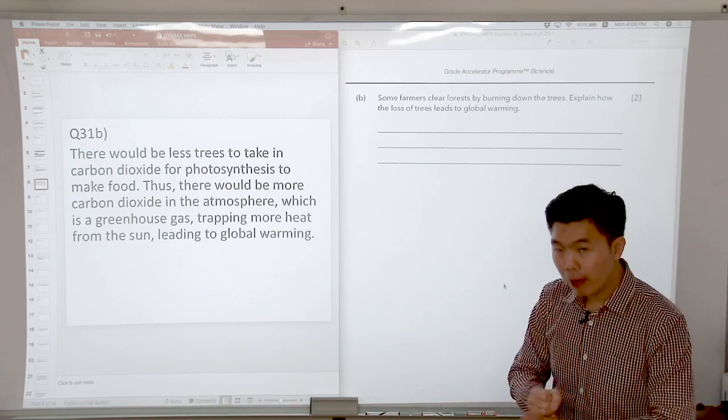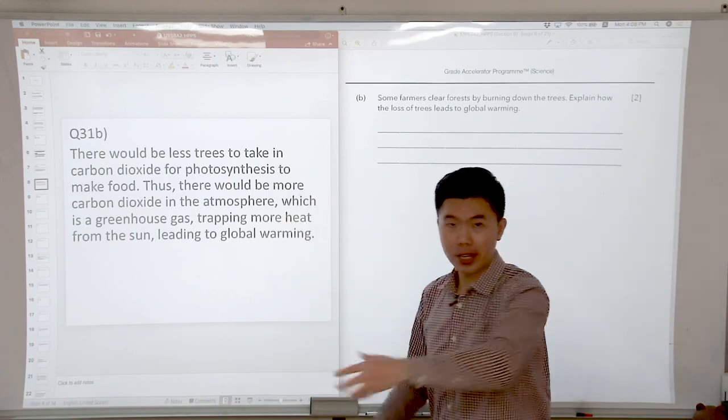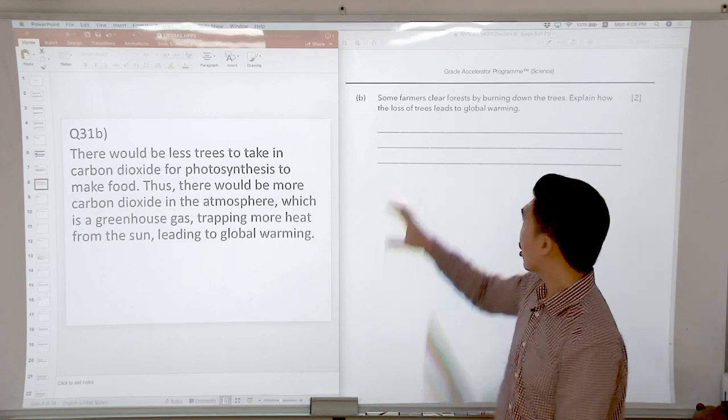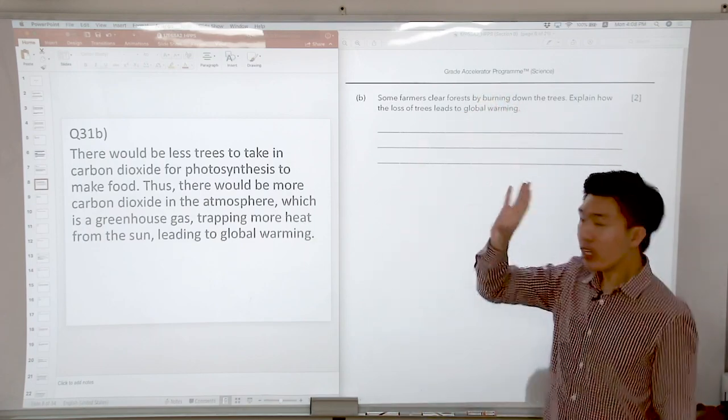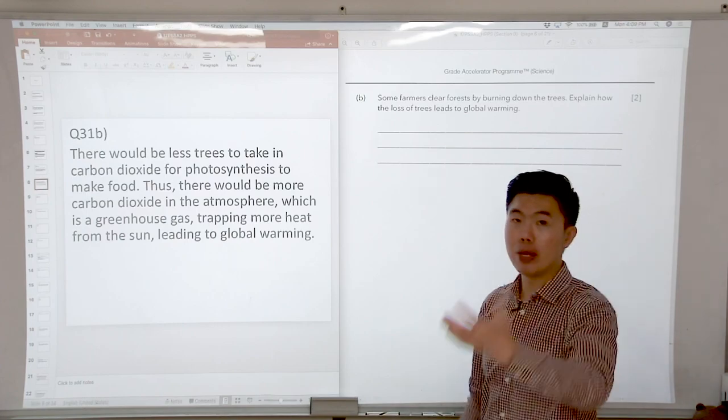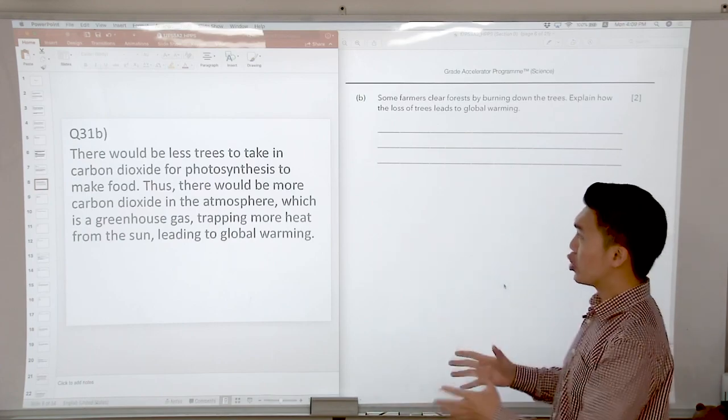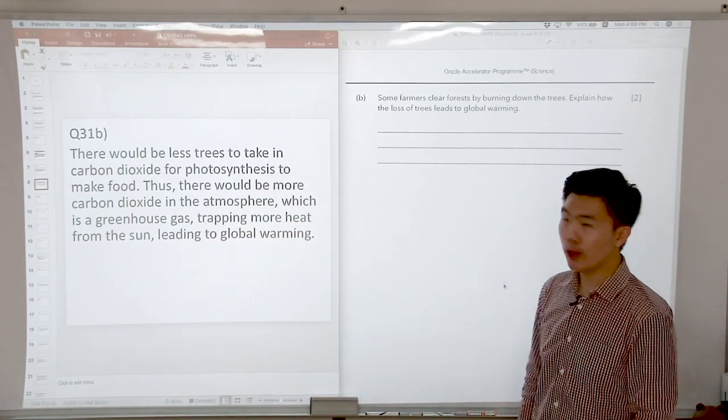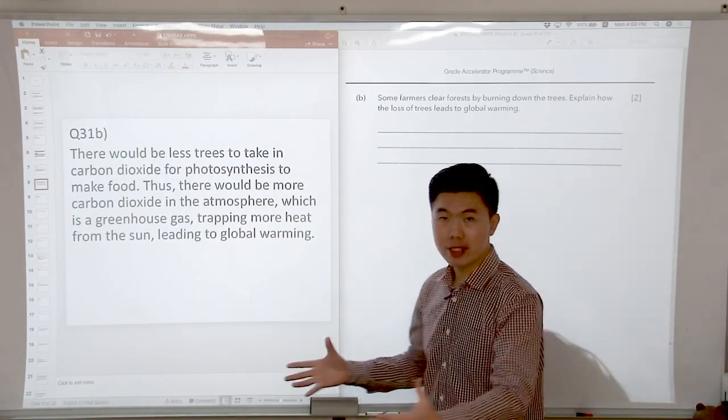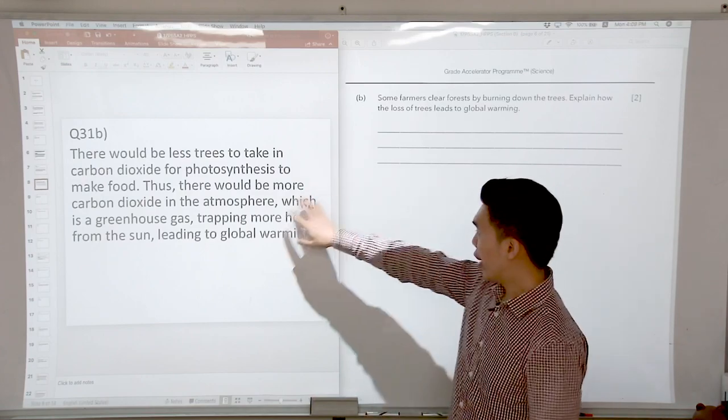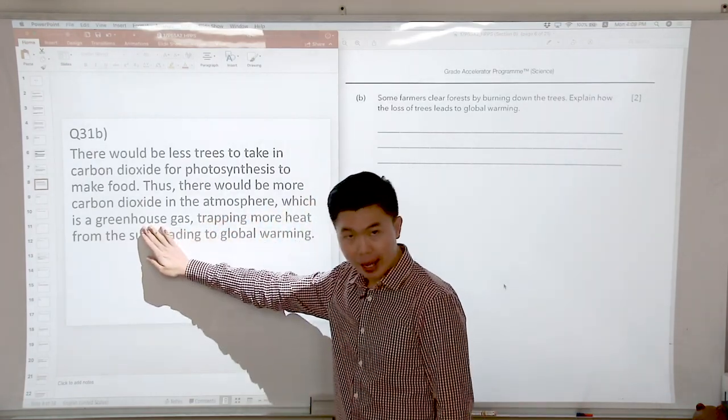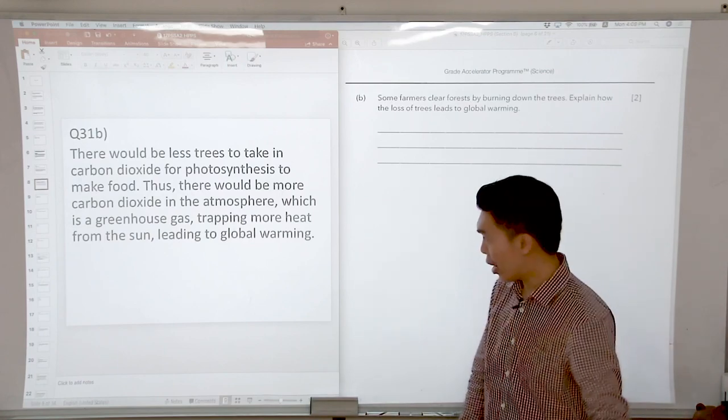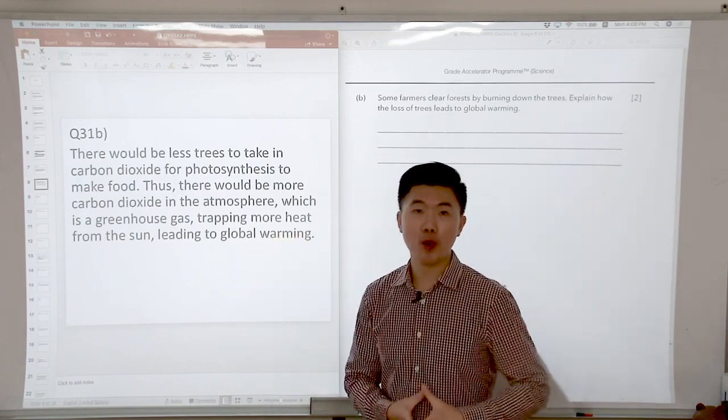You either talk about less trees to take in carbon dioxide, so more carbon dioxide accumulates in the surrounding air, or you talk about the burning of trees directly releasing the carbon dioxide. So both explanations will be possible. In this case, I just talk about less trees to take in carbon dioxide for photosynthesis to make food, so there will be more carbon dioxide, and you must make sure you specify which is a greenhouse gas, and it will trap more heat from the sun that leads to global warming.